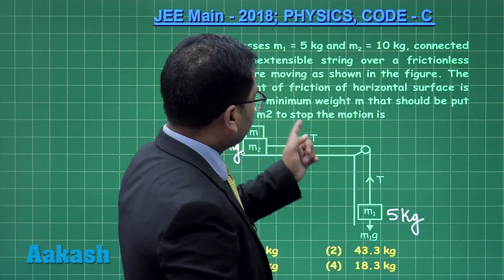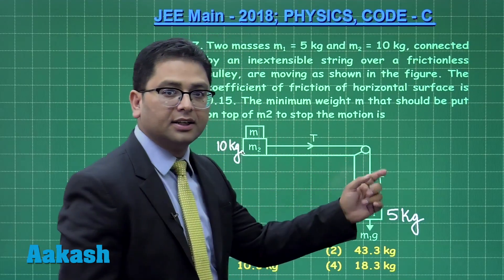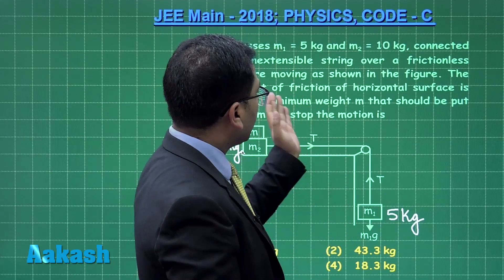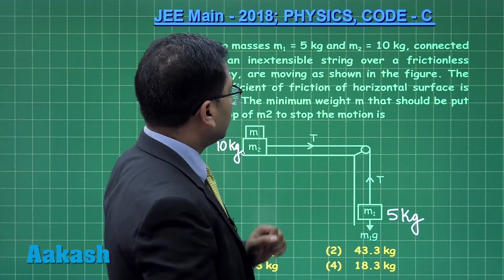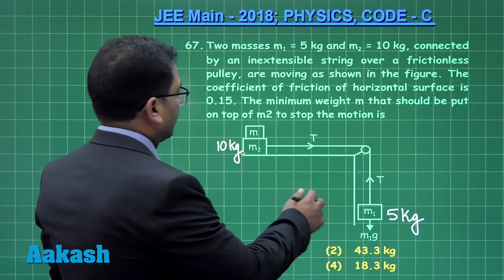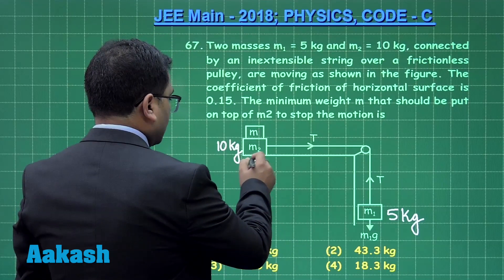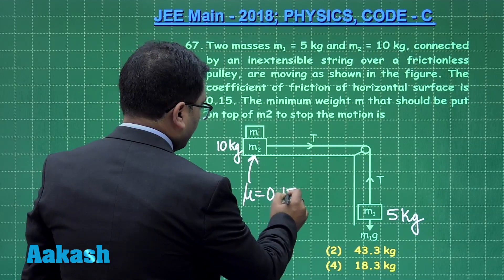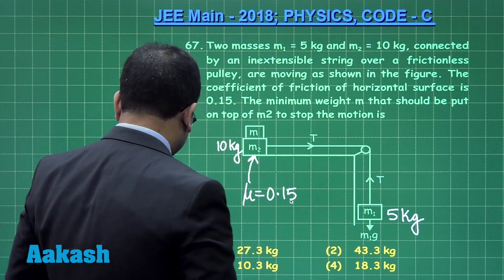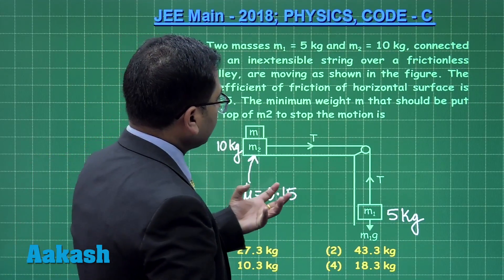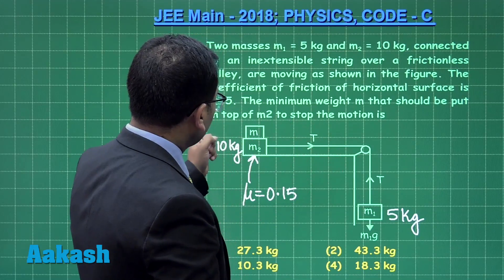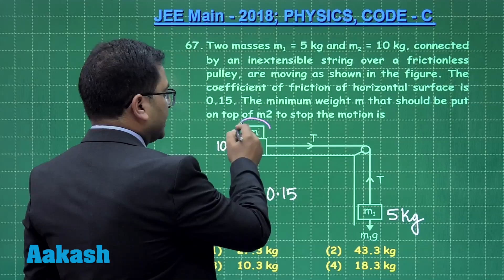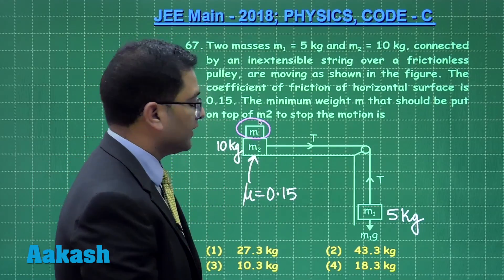They are connected by an inextensible string over a frictionless pulley, so that simplifies our solution. The coefficient of friction of the horizontal surface is 0.15, so mu equals 0.15. The question asks for the minimum weight m that should be put on top of m2 so that the motion would stop.